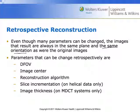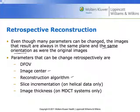The things that we can change include the display field of view — say the scan was scanned at too small of a display field of view, we can increase that. We can also change the isocenter or the image center. We can change the reconstruction algorithm — for example, we could add a filter to filter out metal, or we could use iterative reconstruction techniques in retrospective reconstruction.